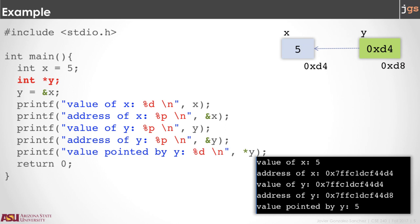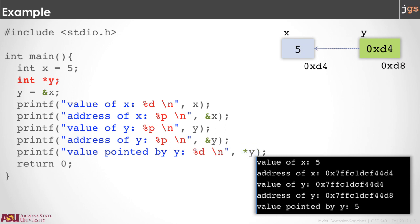There are two important operators to remember when working with pointers. The first one is the ampersand — the ampersand gets the address of a variable. The other is the asterisk, and the asterisk has two uses. The first one is to create the pointer — when you use the asterisk between the type and the name, you are creating a pointer. But also, the asterisk lets you use the name of the pointer and access the value in the address that is pointed by the pointer. Another thing to notice is that you can print the address of a variable using the control symbol %p — p as in pointer.